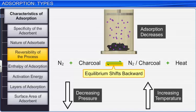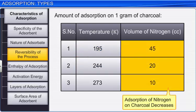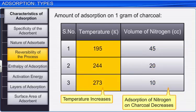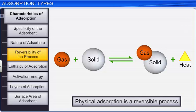For example, 1 gram of charcoal absorbs about 10 cc of nitrogen at 273 Kelvin, 20 cc at 244 Kelvin, and 45 cc at 195 Kelvin. It is observed that adsorption of nitrogen on charcoal decreases with an increase in temperature. Thus, physical adsorption is a reversible process due to the presence of weak Van der Waals forces of attraction.